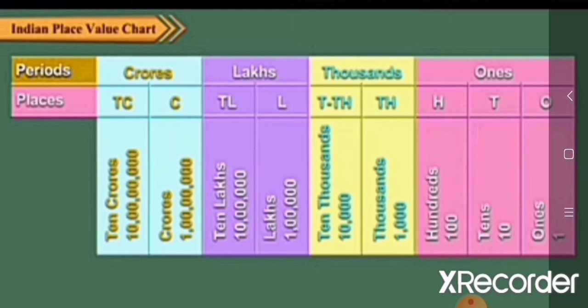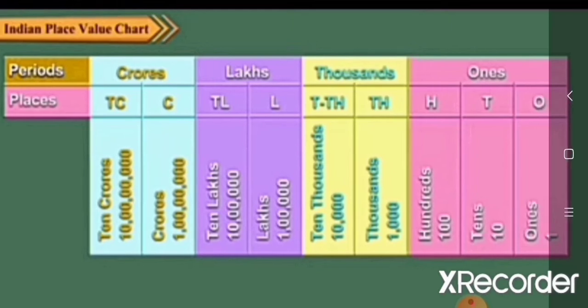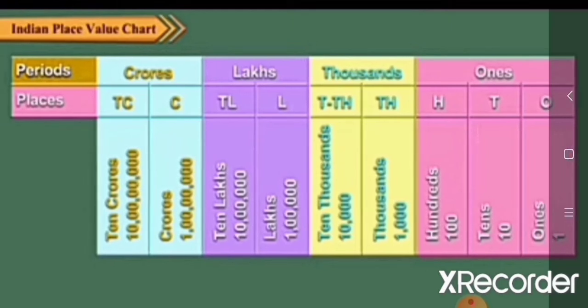Here O denotes ones, T denotes tens, H denotes hundreds, Th denotes thousands, T-Th denotes ten thousands, L denotes lakhs, TL denotes ten lakhs, C denotes crores, and TC denotes ten crores.